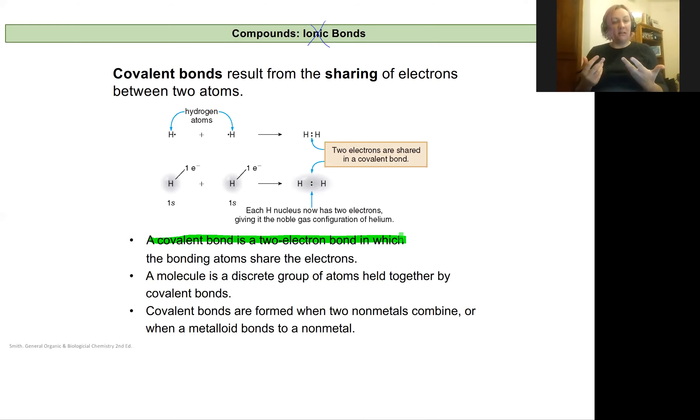We'll get into that a lot more at the end of this quarter when we talk about covalent bonding in detail. It's also important to note that when these atoms share electrons in this way, they form a molecule rather than just a compound. That molecule is going to be a discrete group of atoms that are held together by those covalent bonds.